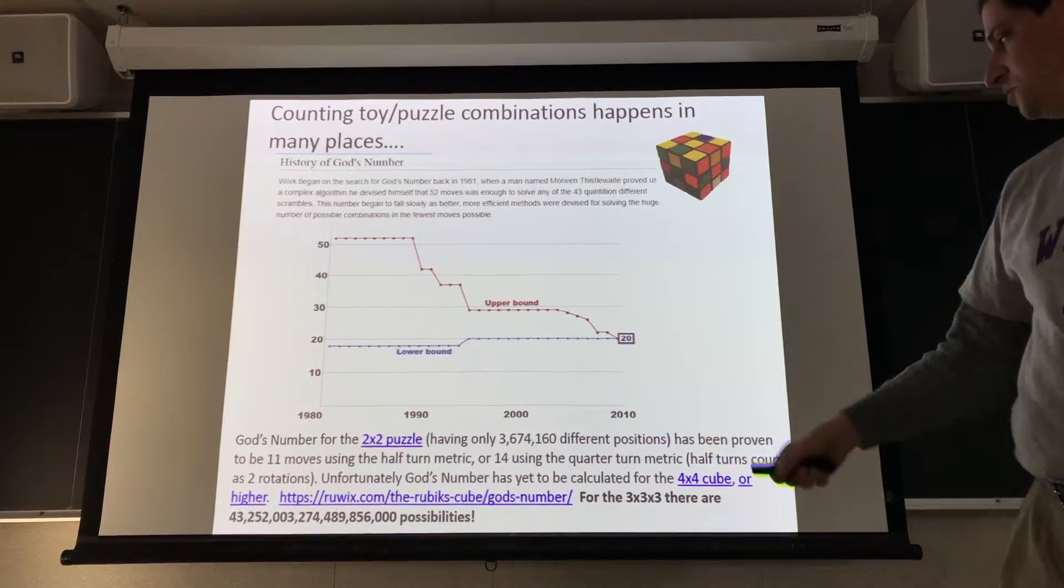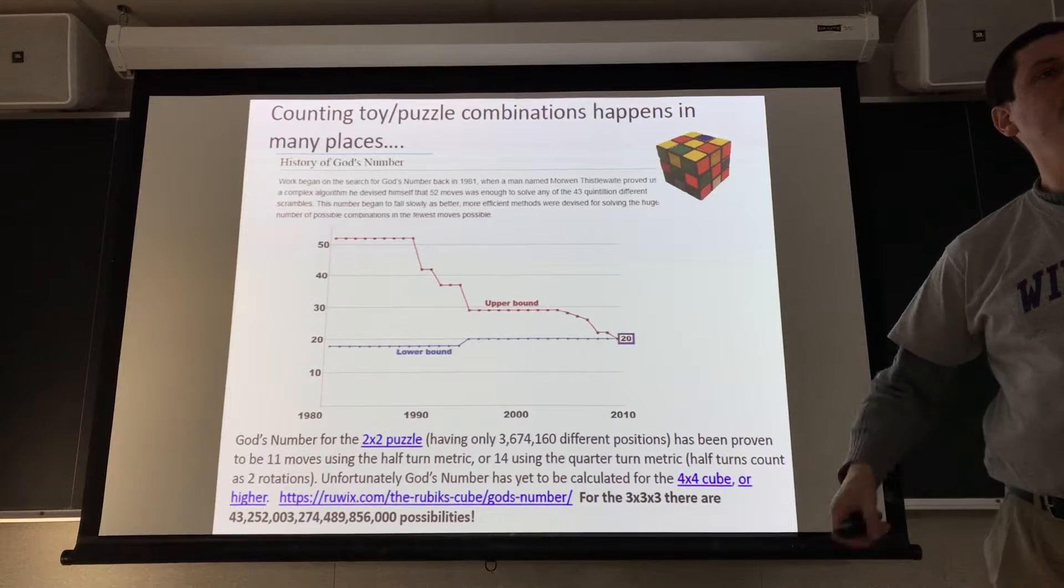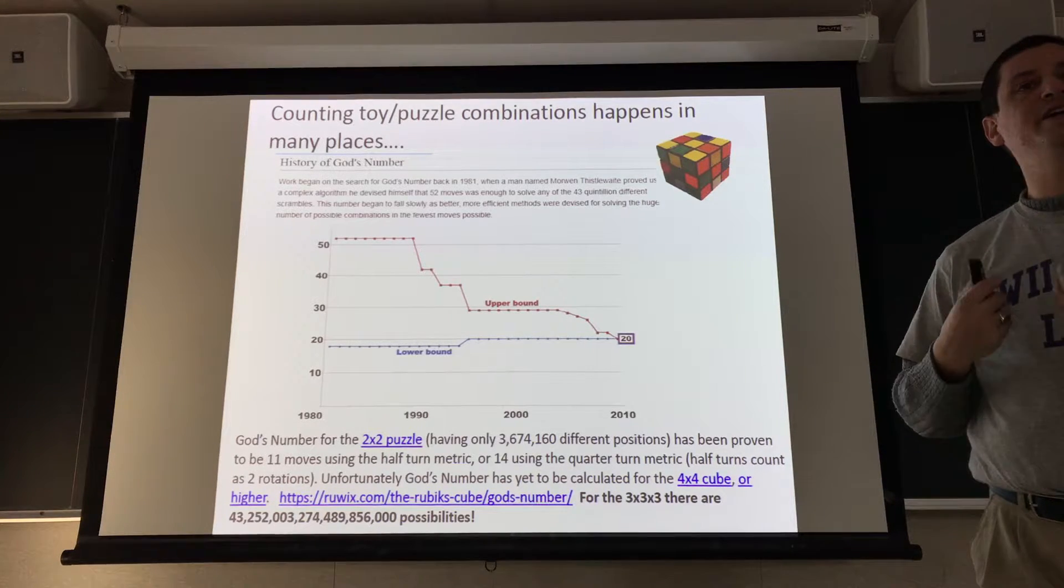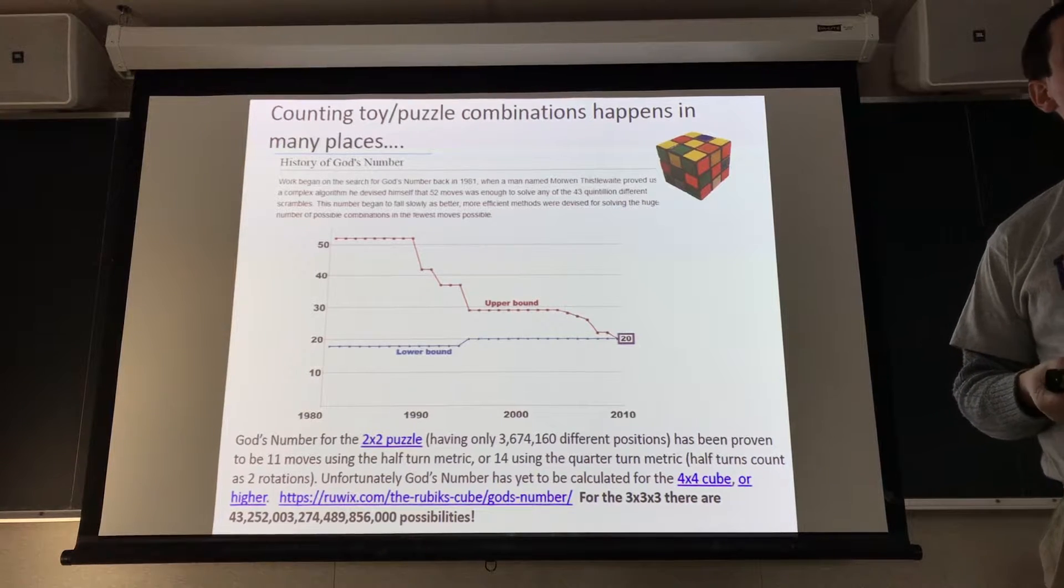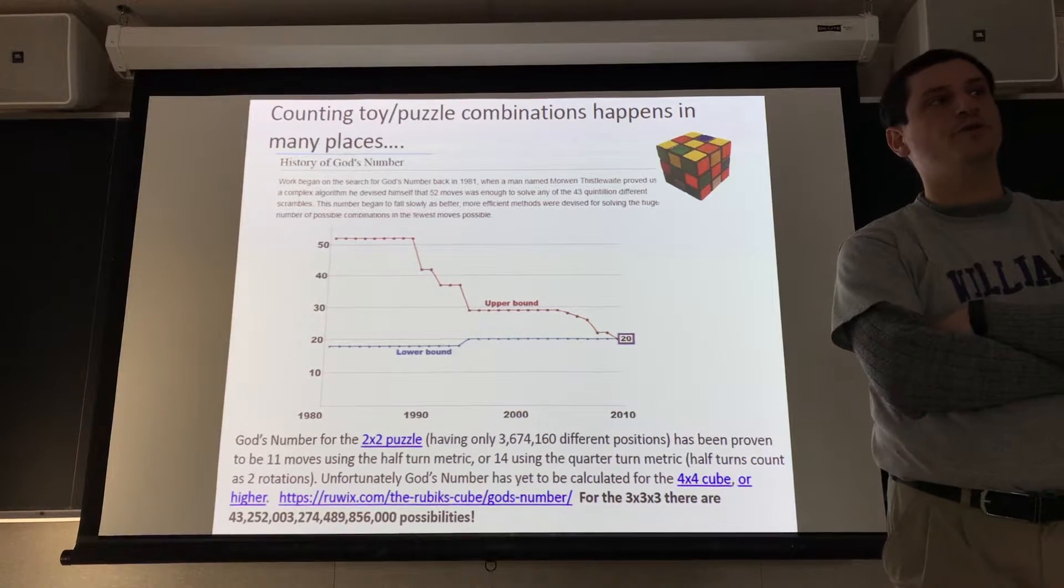There are 43 quintillion different scrambles, I believe up to symmetry, for the 3 by 3 cube. So writing it out, that is our number all the way down here. For the 2 by 2 cube, it's much better. There's only a little bit over 3.6 million configurations. For each one, that's not so bad that you can't have a computer investigate them all by brute force. The God number for the 2 by 2 cube is 11, it's unknown what the God's number is for 4 and higher.